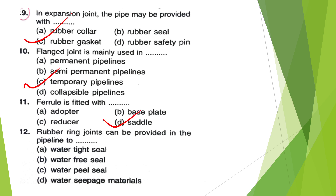Rubber ring joints can be provided in the pipeline to — Water tight seal, Water free seal, Water peel seal, or Water seepage materials? The answer is option A — Water tight seal.